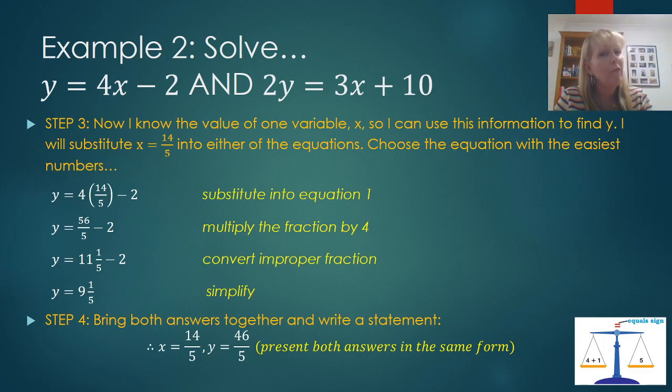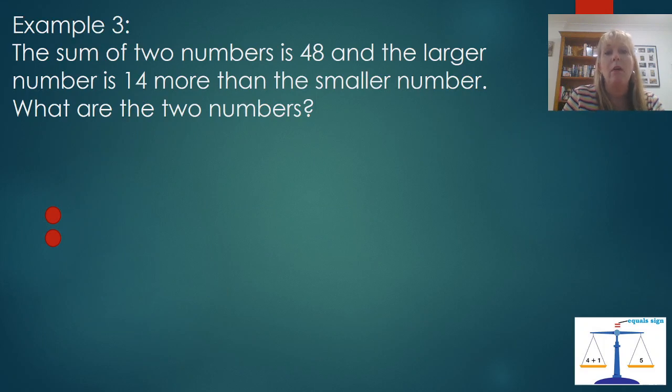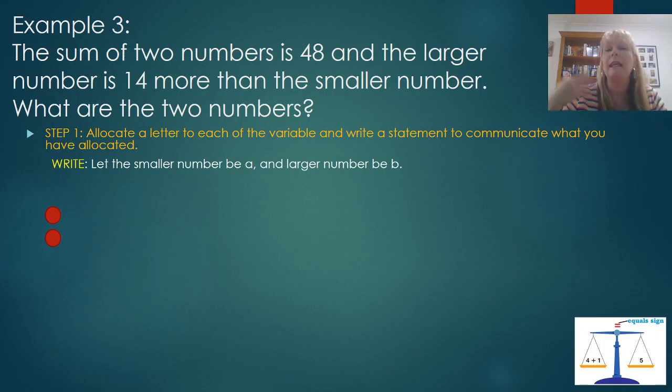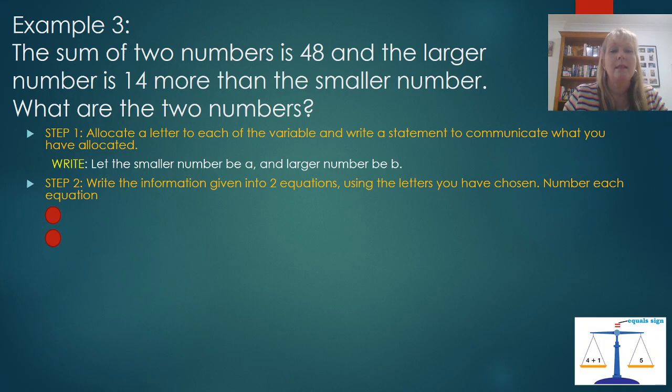Now, we're nearly done, but I do have one more example I'd like to show you. And this is an example using a worded problem. There's a few extra steps that we need to be aware of. So in this particular example, I've got the sum of two numbers is 48 and the larger number is 14 more than the smaller number. What are the two numbers? So the first thing I want to do is allocate a letter to each of the variables and write a statement to communicate to the teacher or the person reading your work what you've allocated. So I've got two numbers. I'm going to give one a letter and the other a letter. So what you're going to write is let the smaller number be A, or you could have chosen any letter of the alphabet, and let the larger number be B.